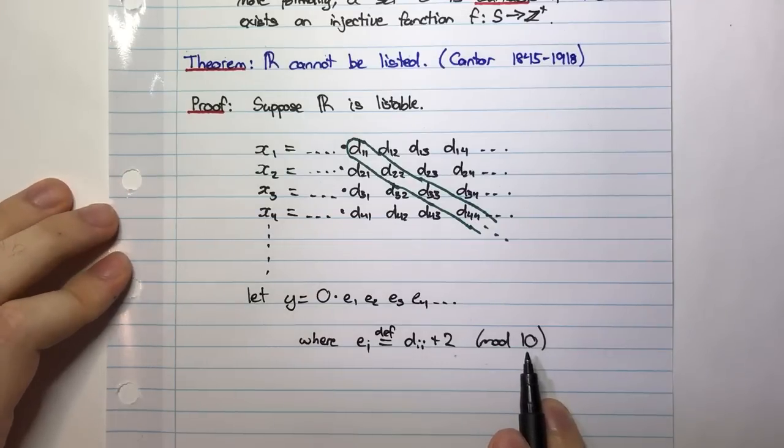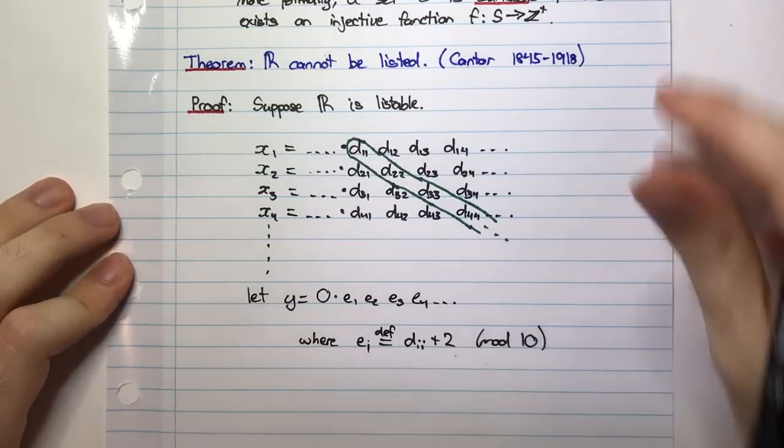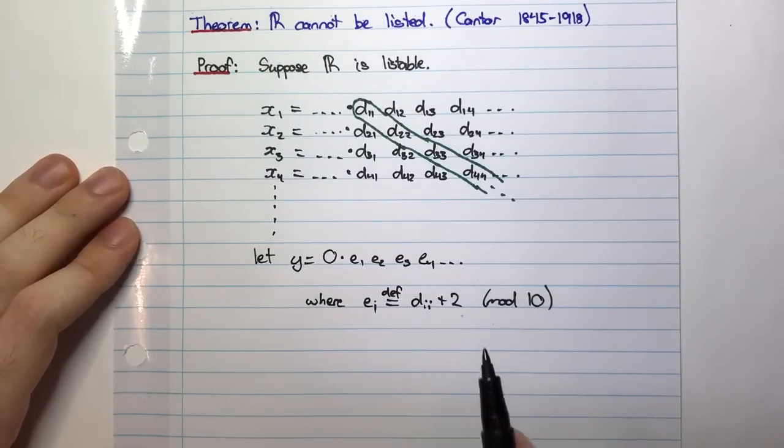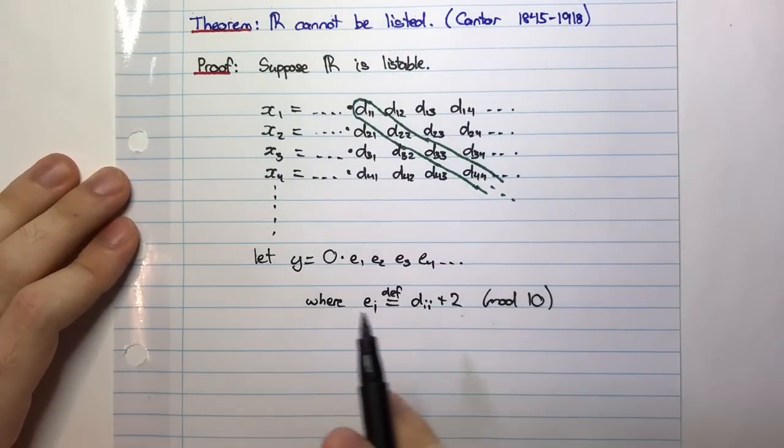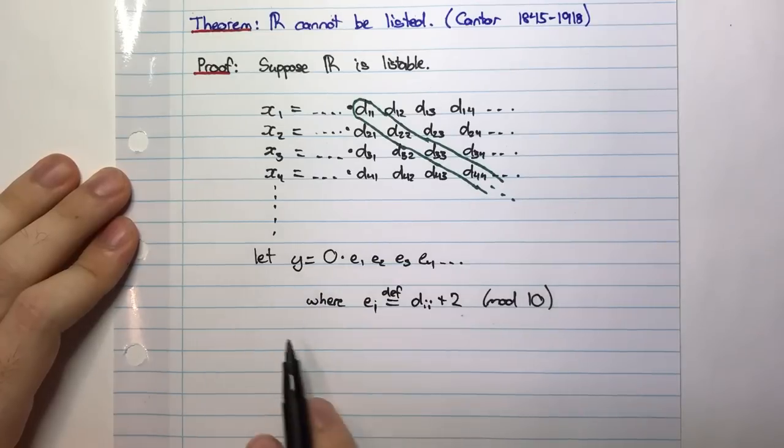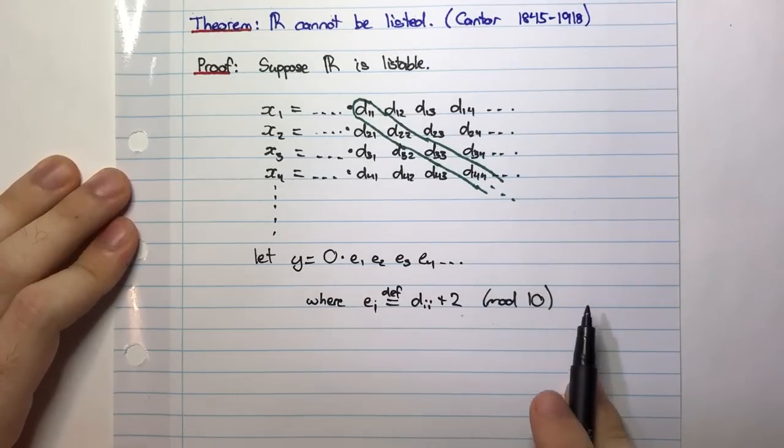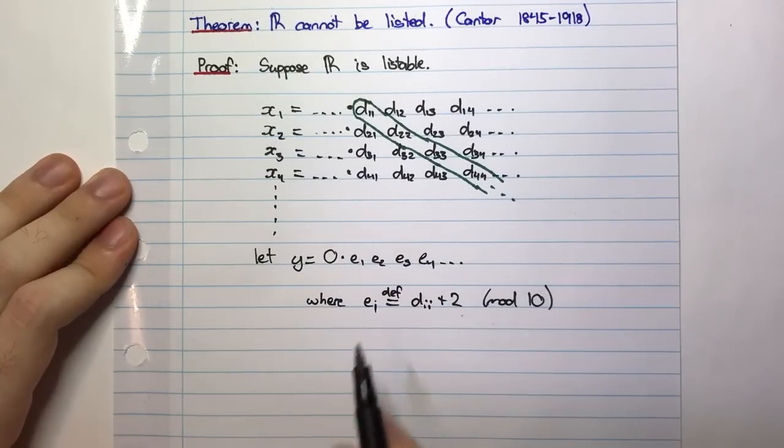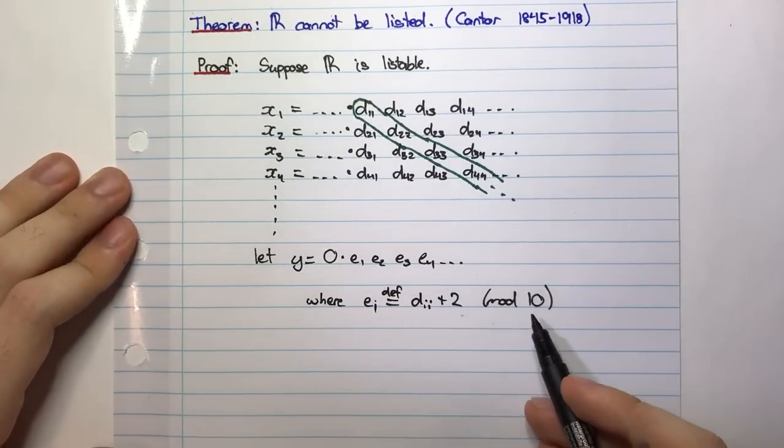So what do I mean by mod 10? Well, if you haven't used modular arithmetic before, it's not too difficult. Mod 10 would mean that zero stays as it is, one stays as it is, all the numbers up to nine stay as they are. But when I get to 10, I loop back around to zero. When I get to 11, I loop back around to one. When I get to 12, I loop back around to two, and so on. So that's really what mod 10 means.